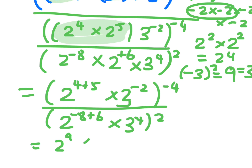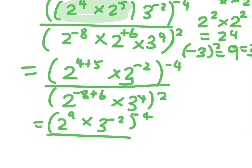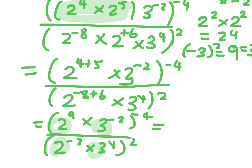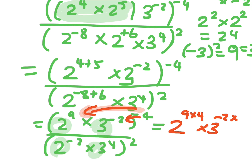So we've got 2 to the 9 times 3 to the minus 2, all to the minus 4. And we have 2 to the minus 2 times 3 to the 4, all to the 2. Now you can't do anything else with these ones inside here, because they have different bases — it's a 2 and that's a 3. So now I'm going to go for the bracket and multiply the indices. So that's 2 to the 9 times 4, times 3 to the minus 2 times 4. And this is 2 to the minus 2 times 2, and 3 to the 4 times 2.